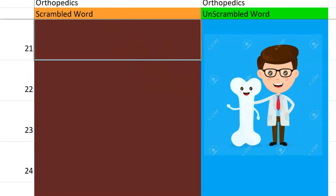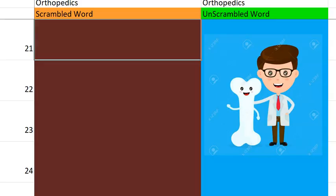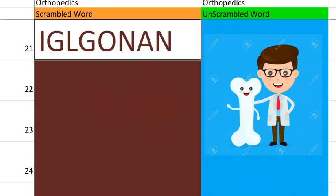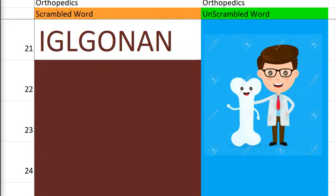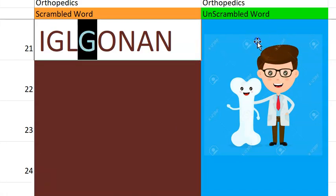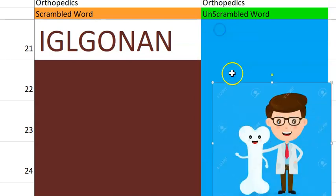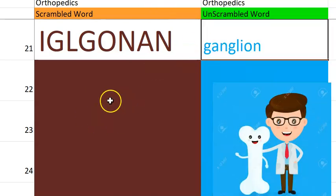That's great guys, you have finished 20 orthopedic words. Now let's go to the 21st one. It begins with a G. How do you define this? Some swelling in your joint, especially in the hand or wrist, with jelly-like fluid inside. Ganglion cyst. Very good.